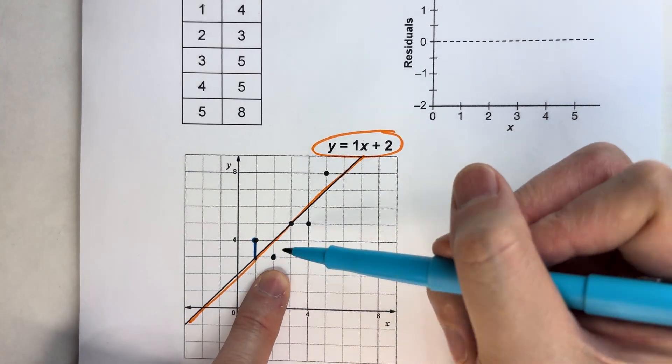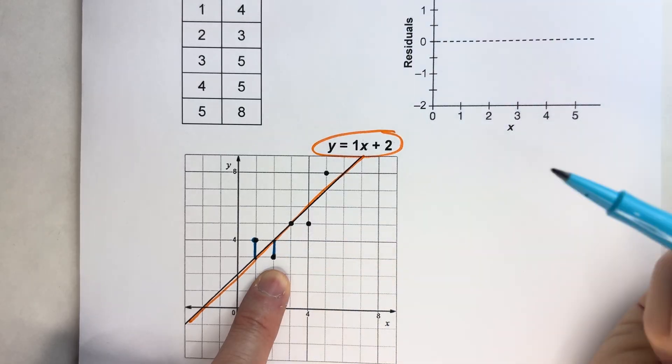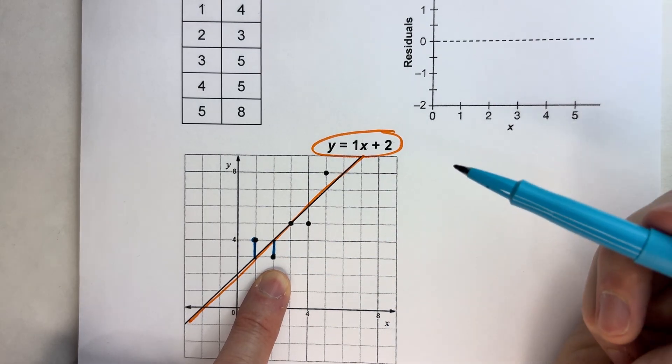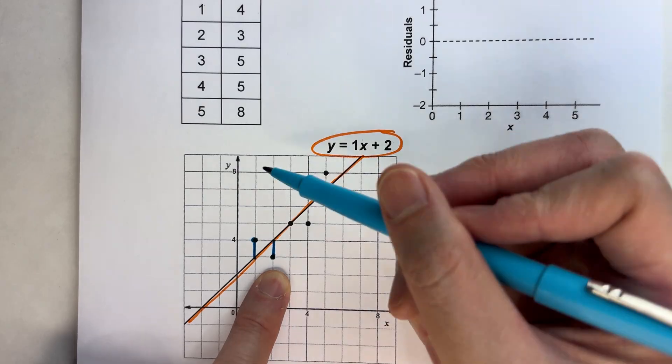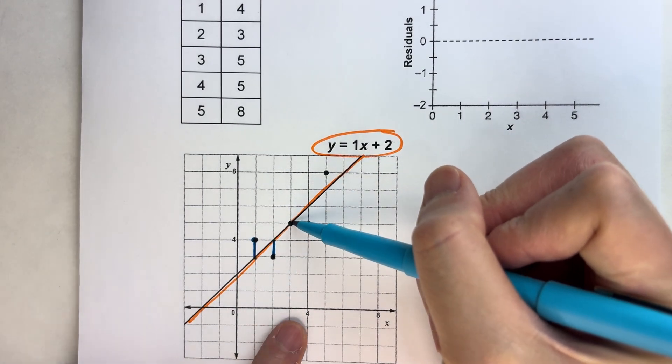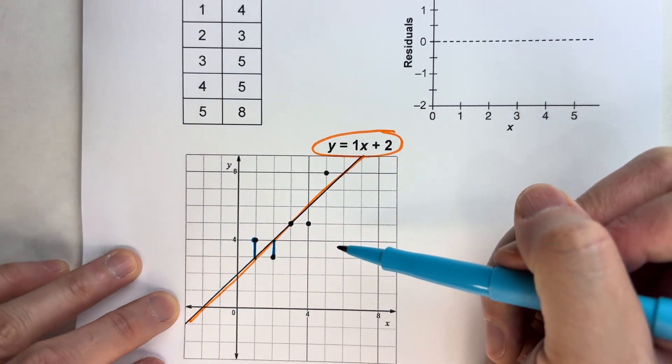And see this data value right here? It's 1 below the line. So it is a residual of negative 1. This point right here is on the line, so its residual is 0.